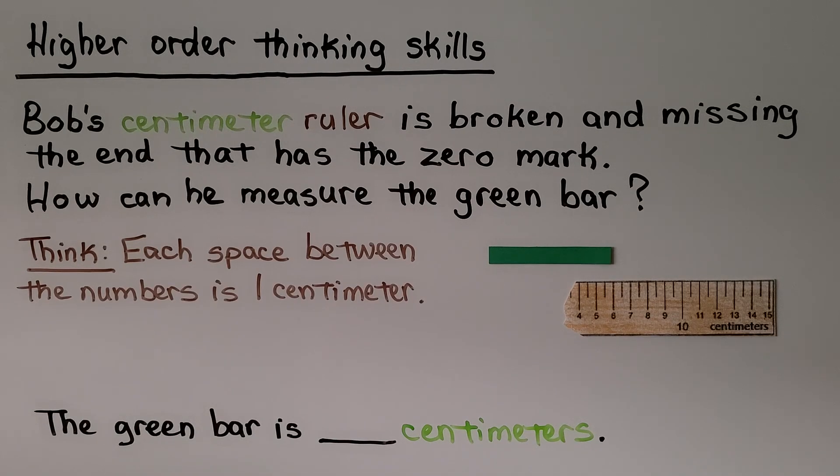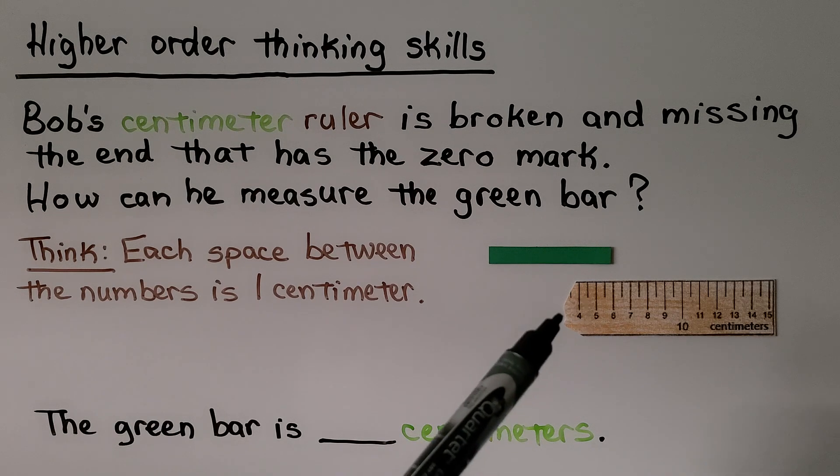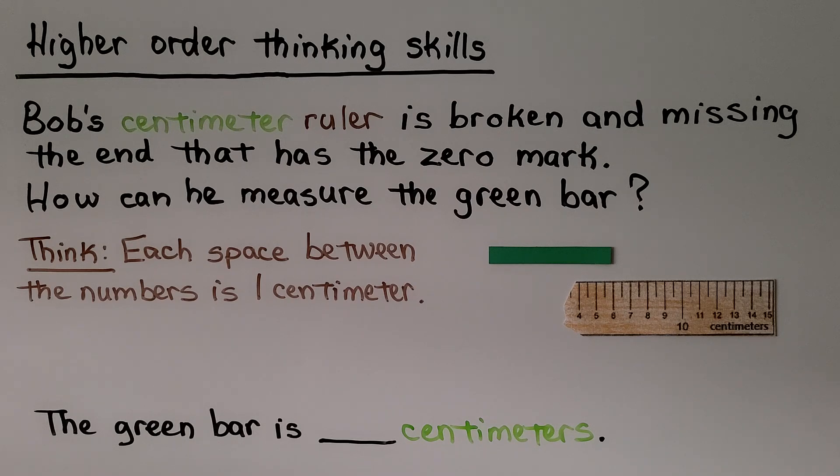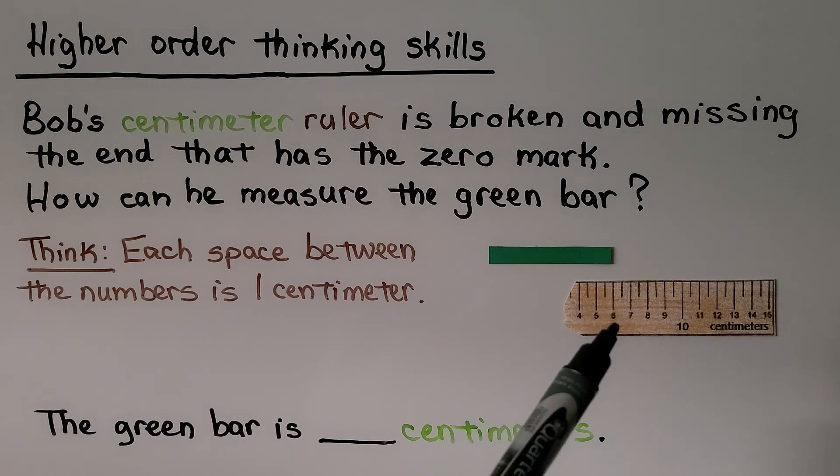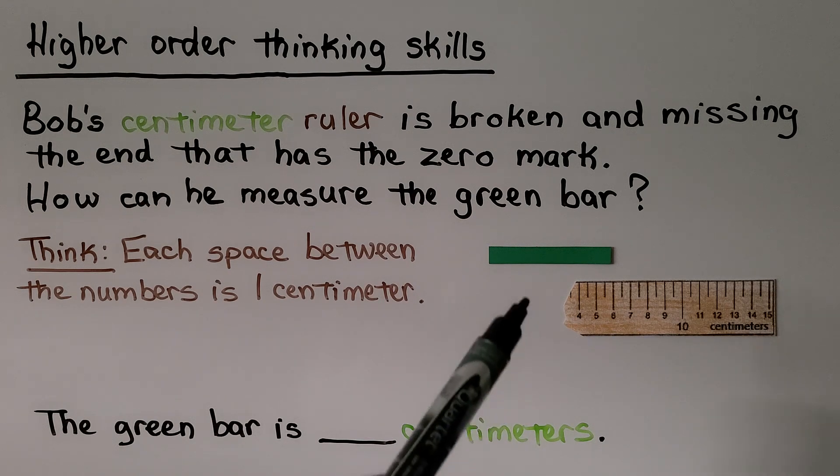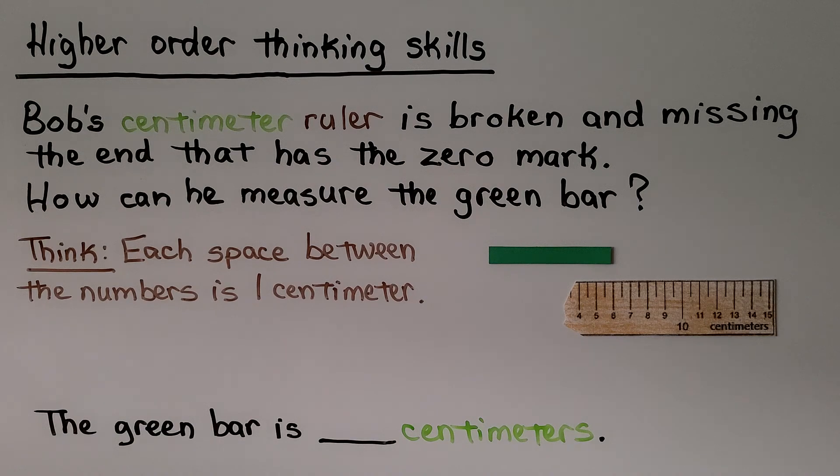Let's try some higher order thinking skills. It says Bob's centimeter ruler is broken and missing the end that has the zero mark. It broke off and now it just has a 4 here, 5, 6, so the 0, 1, 2, 3 is broken off. How can he measure the green bar? Now we think each space between the numbers is 1 centimeter.